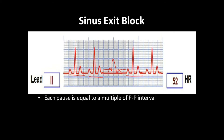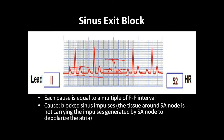Each pause is equal to a multiple of the PP interval. The PP interval is measured from the beginning of one P wave to the beginning of the P wave in the next heartbeat. The isoelectric line will be a multiple of the PP interval.